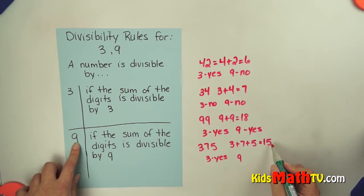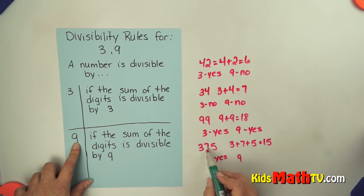Let's try it for 9. Does 15 divide by 9 evenly? No, it does not. So 375 is not divisible by 9. It is, however, divisible by 3.